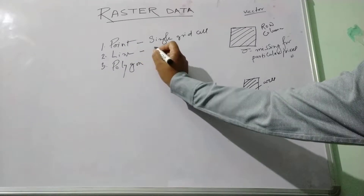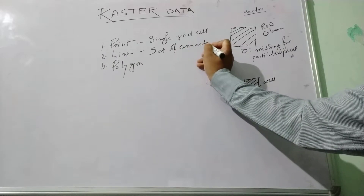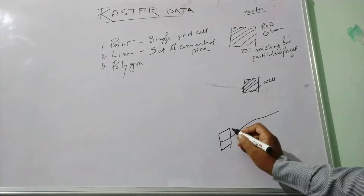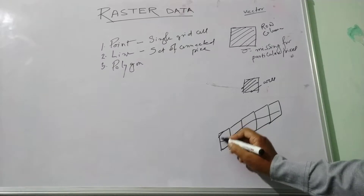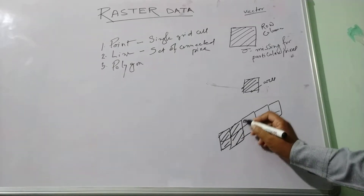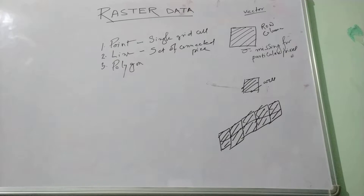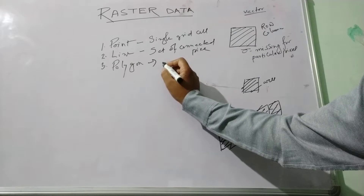A line in raster data is represented as a set of connected pixels. For example, a line in raster data will be represented in this way as connected pixels. And the area, or polygon, is stored as the contiguity of connected pixels covering the entire region.